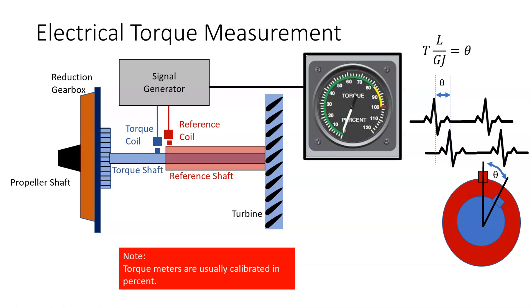Normally, on turboprops, the torque is calibrated in percent, but it can be displayed in Newton meters or foot pounds, etc. But normally it's in percent. Alright, so that's the electrical torque measurement system.